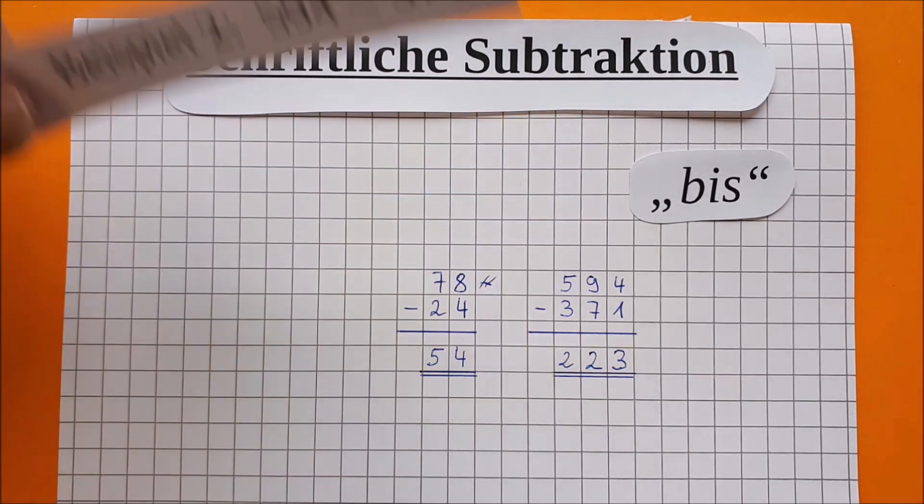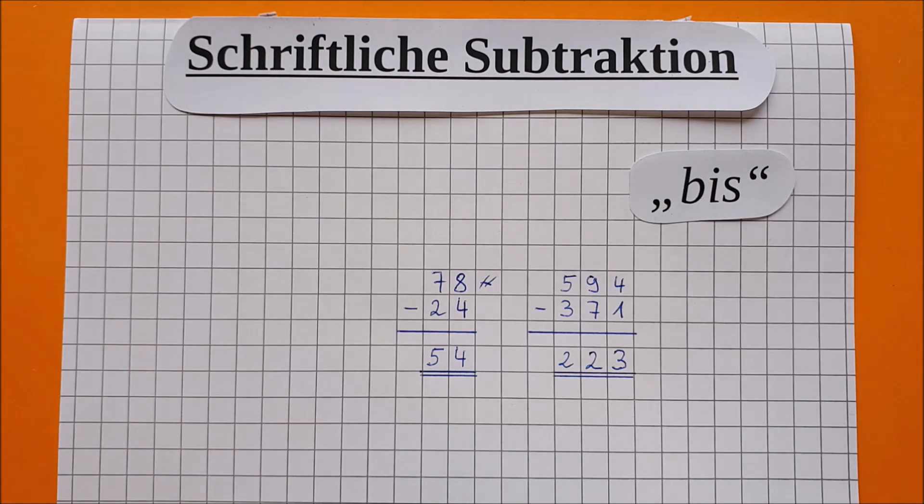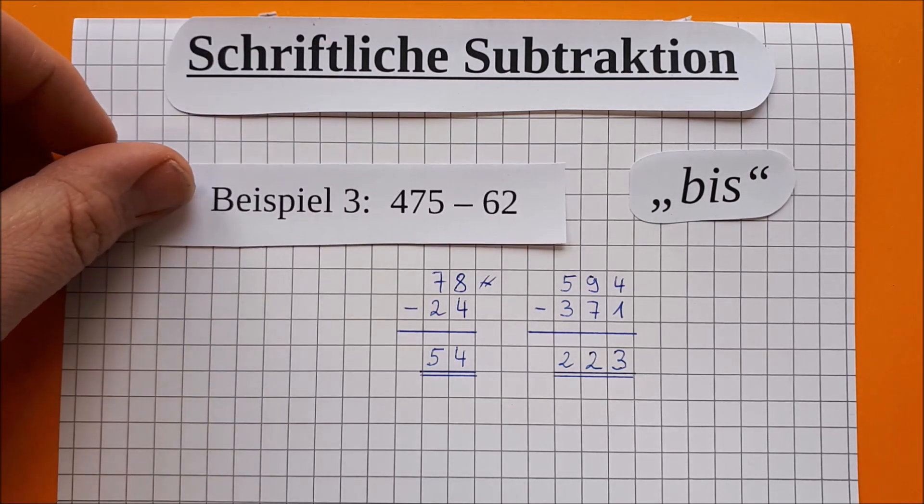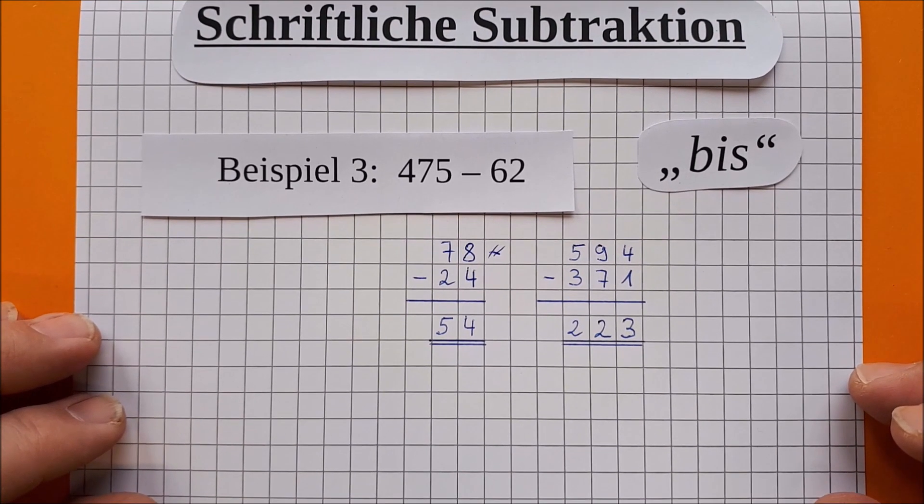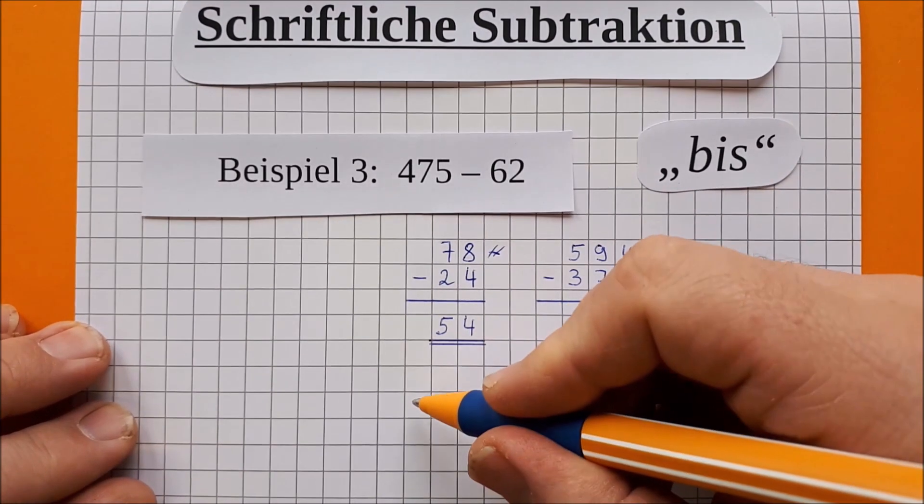Jetzt habe ich noch zwei Sonderfälle für euch, die euch aber keine großen Probleme bereiten werden. Hier, erster Sonderfall. Oh, die zweite Zahl ist kürzer. Ich schiebe hier das Ganze mal ein bisschen höher, damit ich ein bisschen mehr Platz habe. So, ich schreibe die wieder da hin.